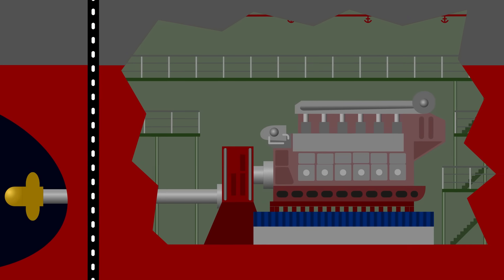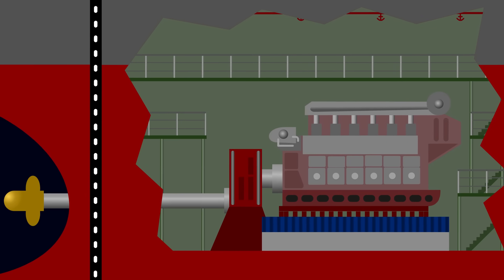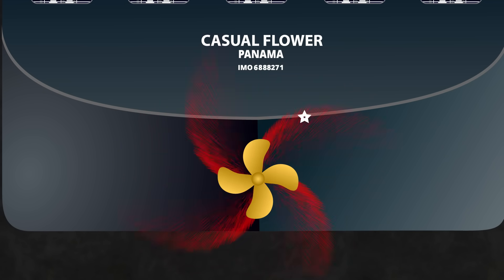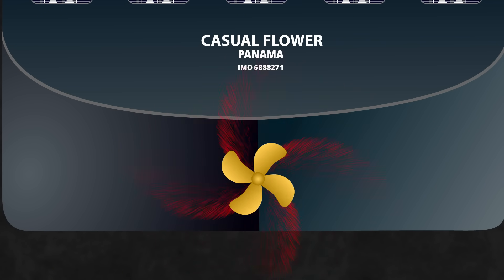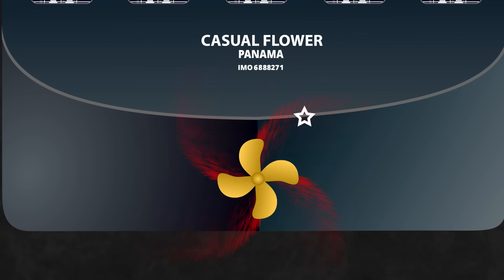It can rotate slower while generating the same thrust as a propeller with fewer blades rotating faster. That slower RPM reduces wear on the mechanical parts and reduces the chance of cavitation. It even reduces the vibrations felt on the ship because the power is spread over more blades, reducing the forces generated by each one.